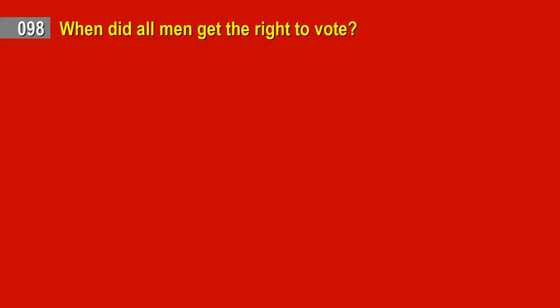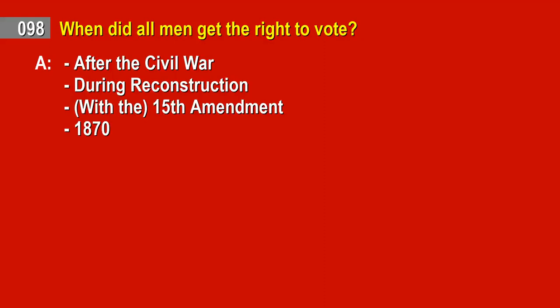Question 98. When did all men get the right to vote? Answer: After the Civil War. During Reconstruction. With the 15th Amendment. 1870.